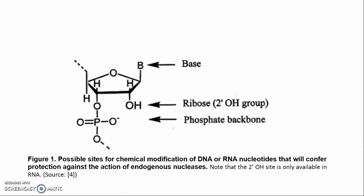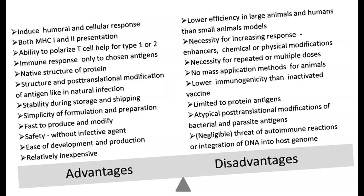Figure 1 shows possible sites for chemical modification of DNA or RNA nucleotides that confer protection against the action of endogenous nucleases. Note that the 2'-O site is only available in RNA. In the phosphate backbone, in RNA nucleotides, the 2' hydroxyl group missing in DNA nucleotides can also be modified.